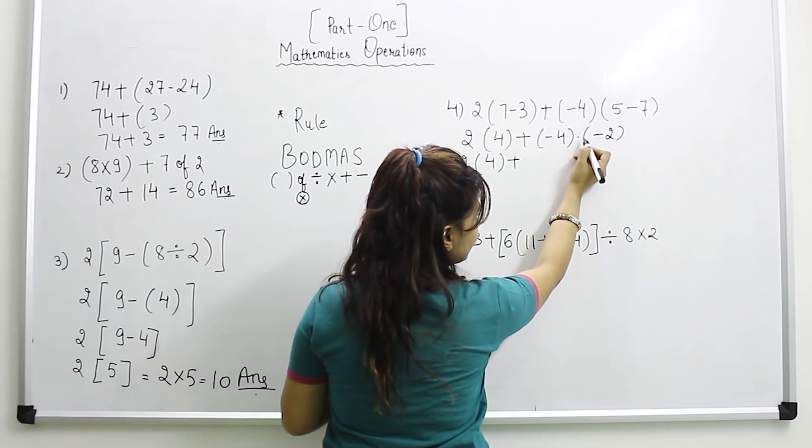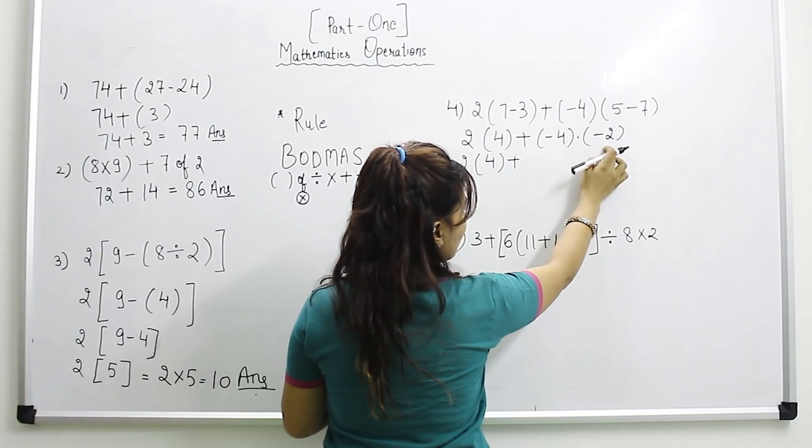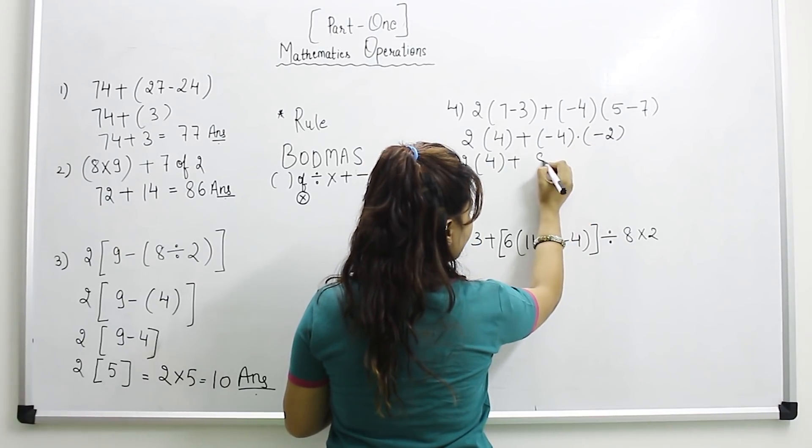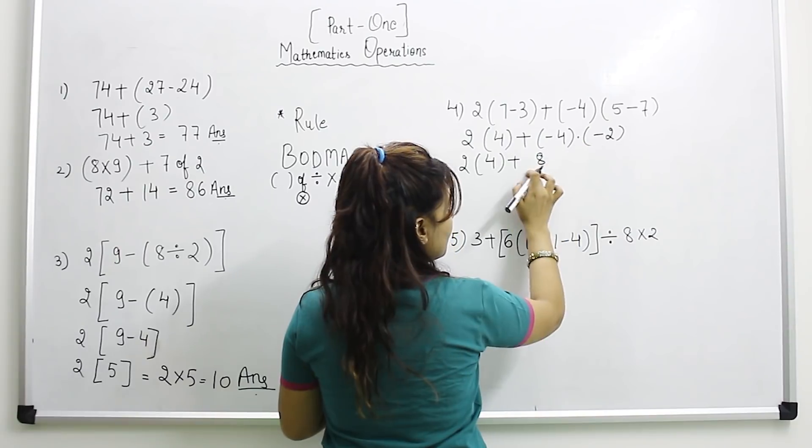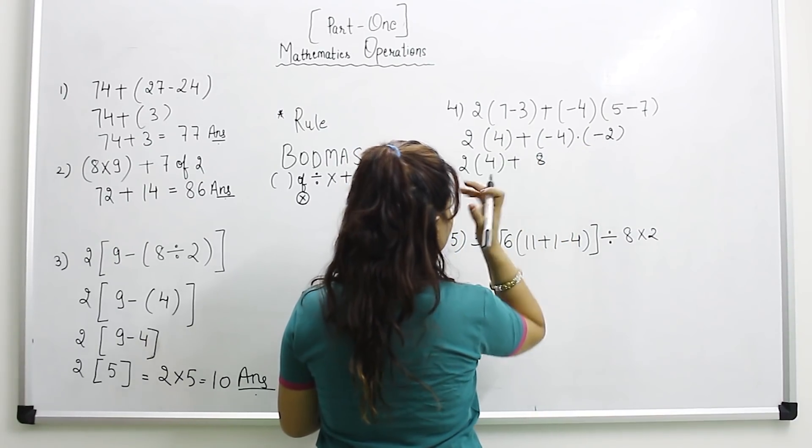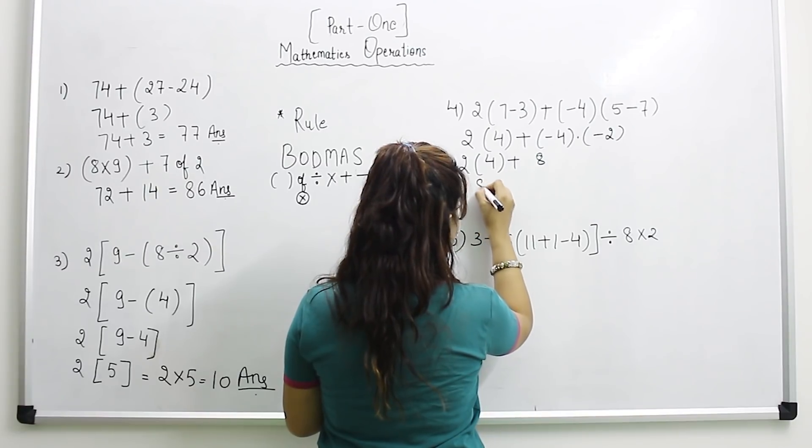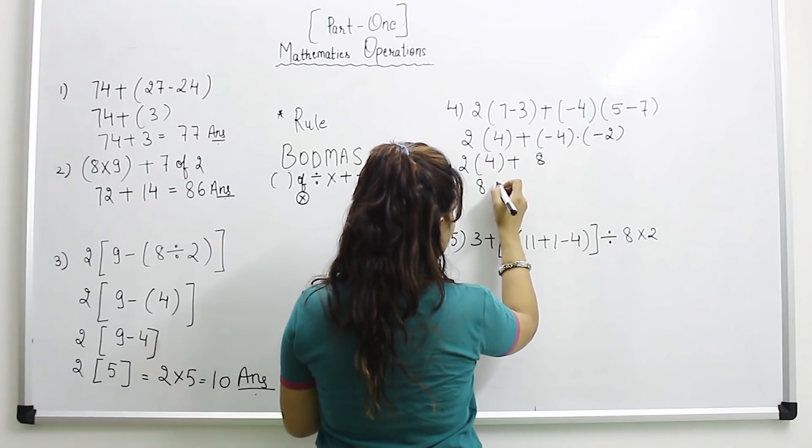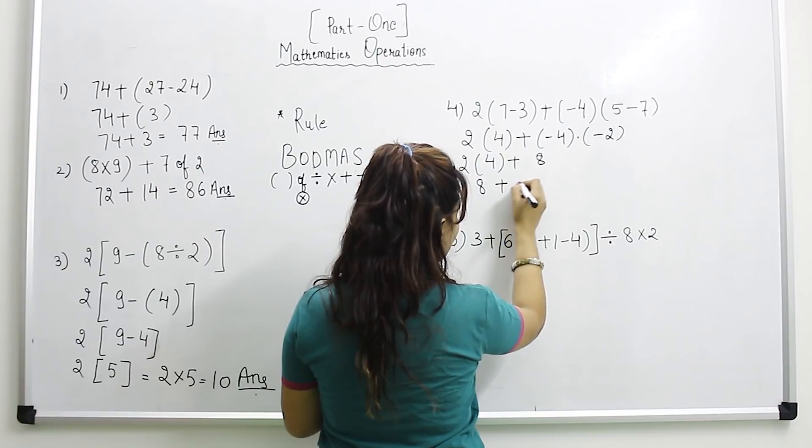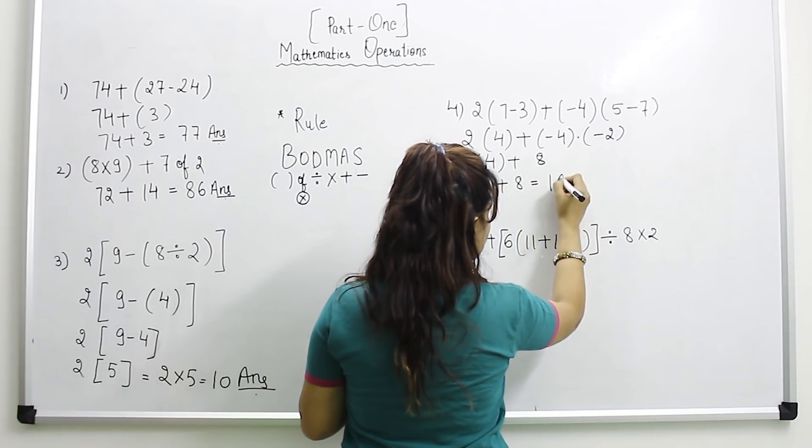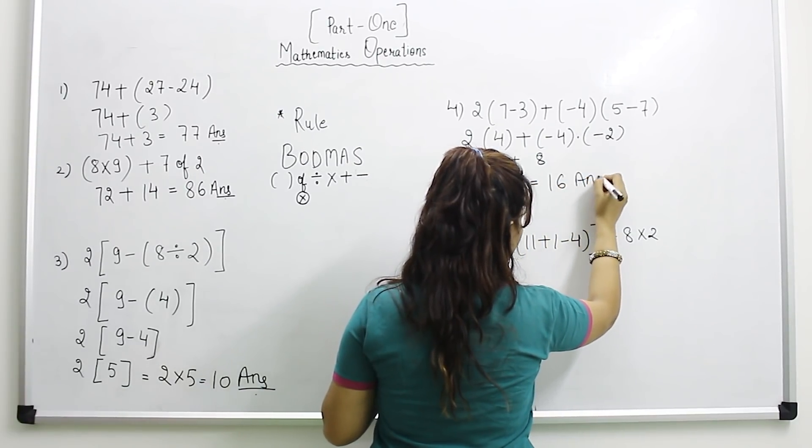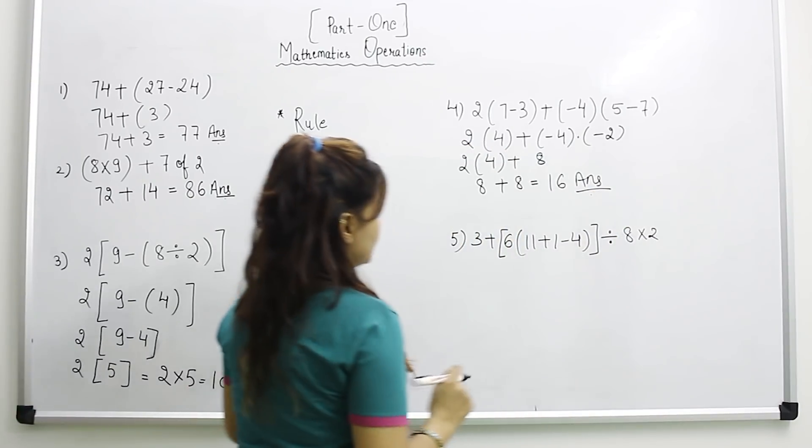4 into 2 is 8. This will be plus 8, not minus 8. 4 plus 8 equals 12, and 3 into 4 equals 12. We will take it as an answer.